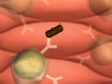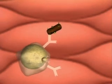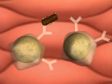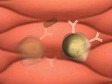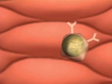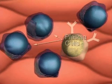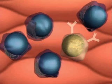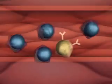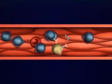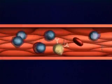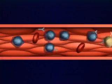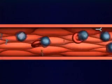These B cells now divide. Some continue to divide, producing many plasma cells. Plasma cells secrete large quantities of antibodies into the bloodstream. This division of only the appropriate B cells is called clonal selection.